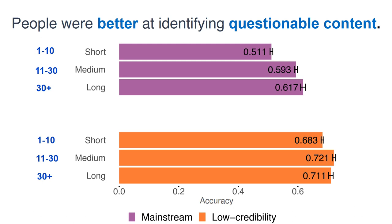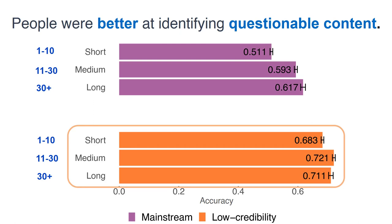We found statistically significant improvement when comparing the short player group with medium and long player groups for both types of articles. However, the effect size is higher for mainstream articles than for low-credibility content. Comparing medium and long player groups revealed no statistically significant differences for either type of content. These results indicate that those who play more than one round are better at recognizing whether an article comes from a mainstream or low-credibility source. However, the improvement could be attributed either to self-selection — those who play multiple rounds having a predisposition to distinguish sources — or to learning effects from FAKEY.